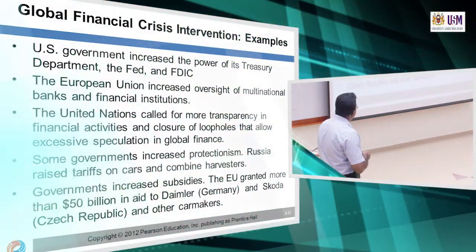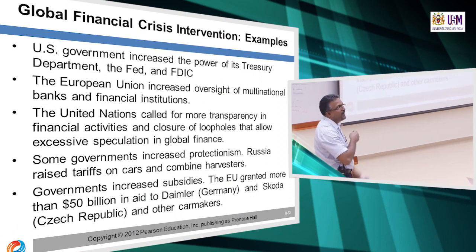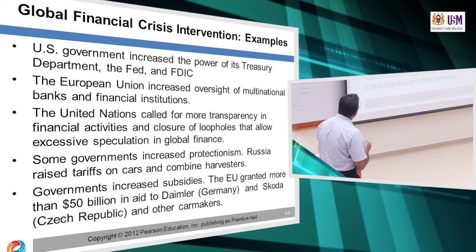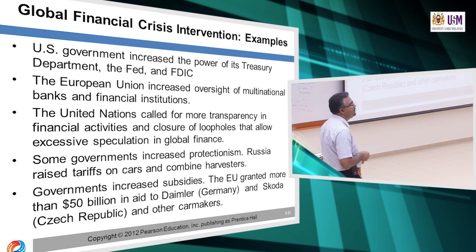Examples of how the government put back intervention during the crisis: the US government increased its power on the Treasury Department, the European Union increased the role of multinational banking and financial institutions, some governments increased protectionism, and Russia raised tariffs.